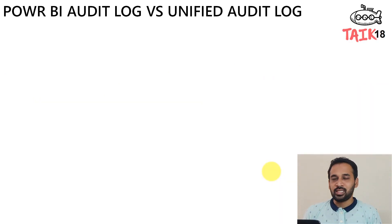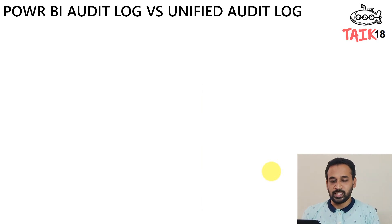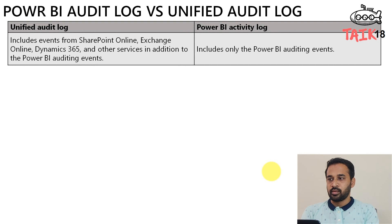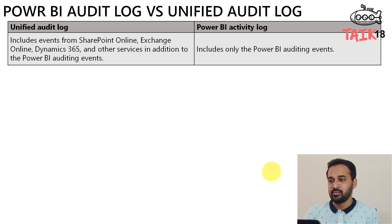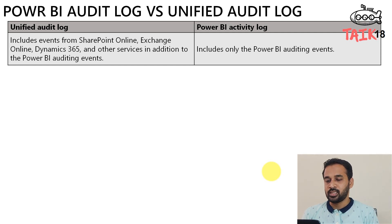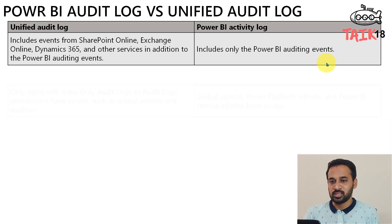Basically there are two audit logs. One is the Power BI audit log and the other is the unified audit log. The unified audit log includes events from SharePoint Online, Exchange Online, Dynamics 365, and other services, in addition to Power BI auditing events — so it is essentially an Office 365 log. The Power BI audit log includes only Power BI auditing events.